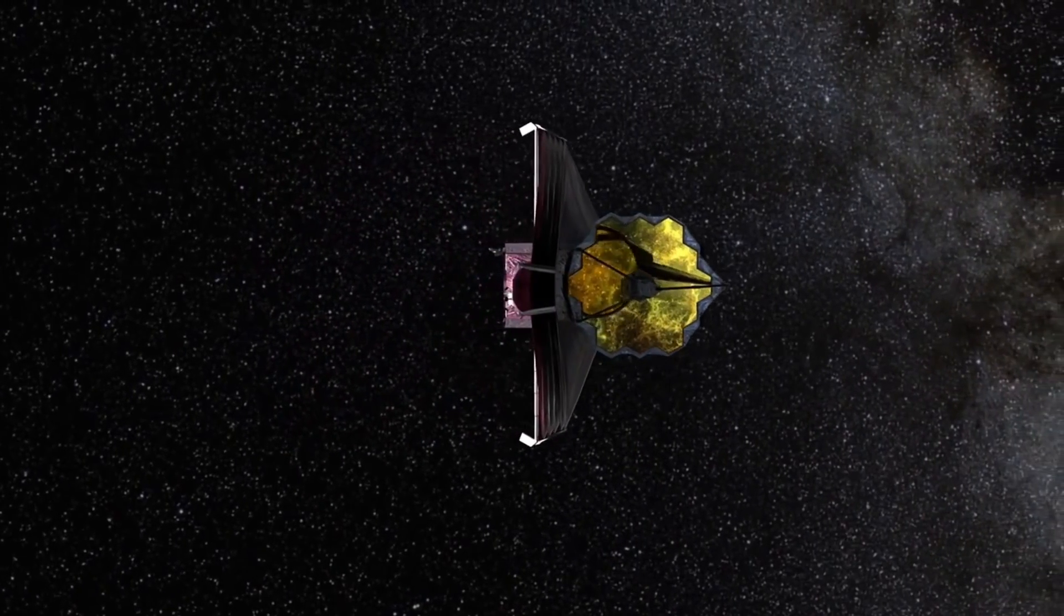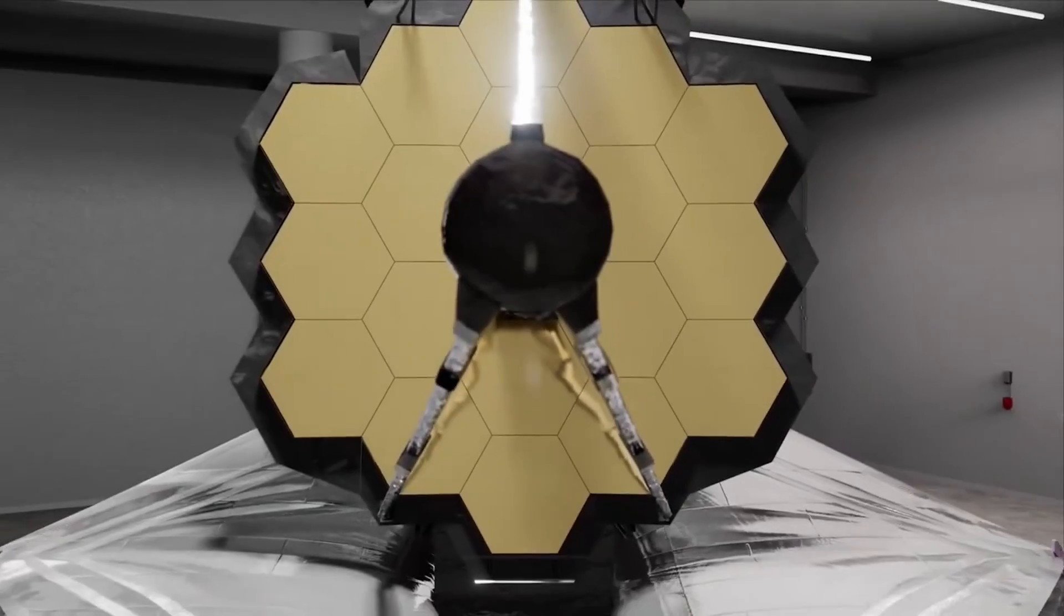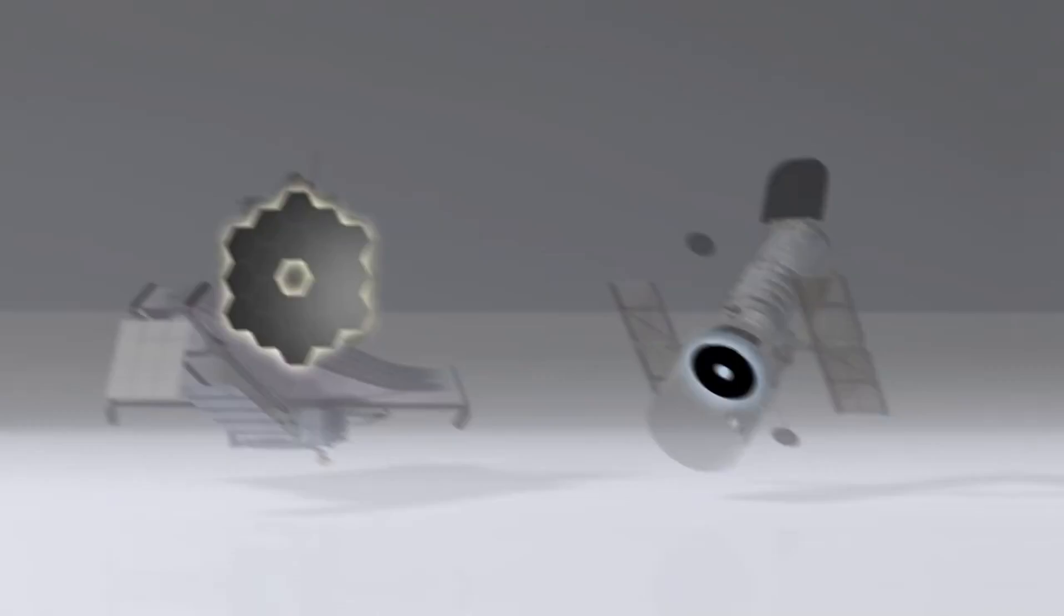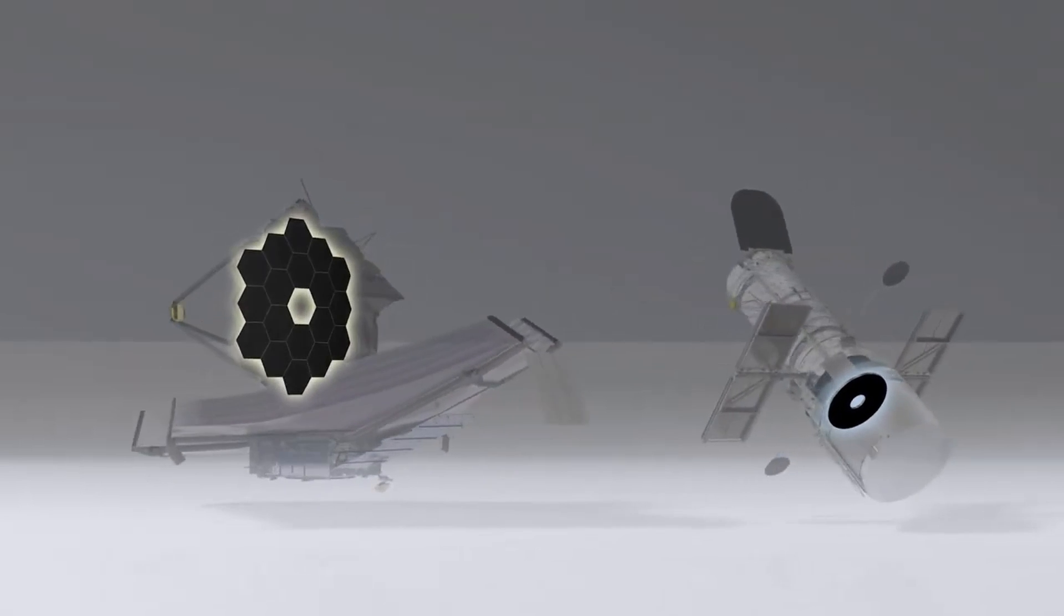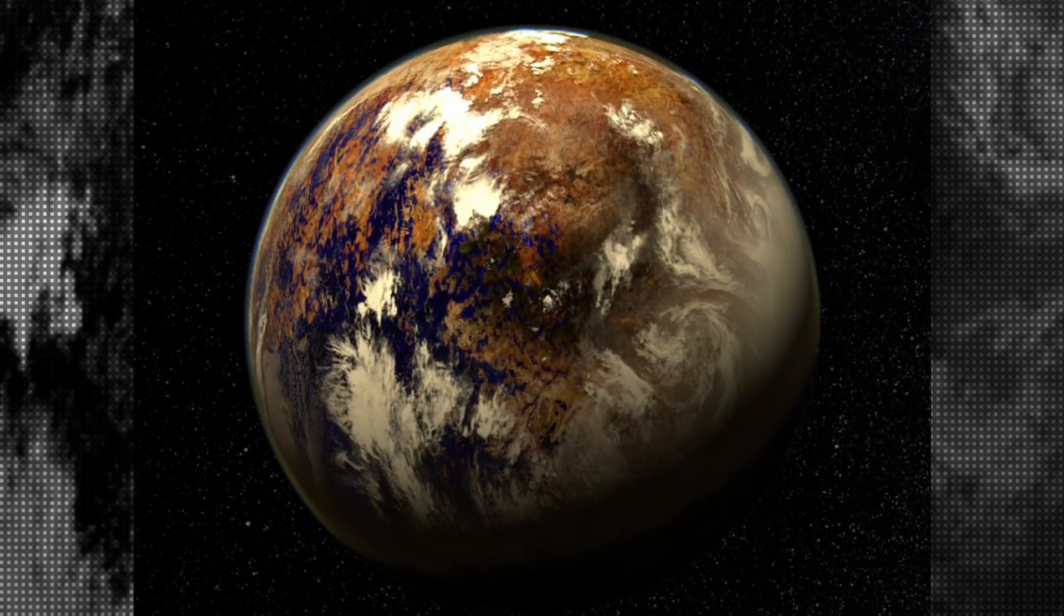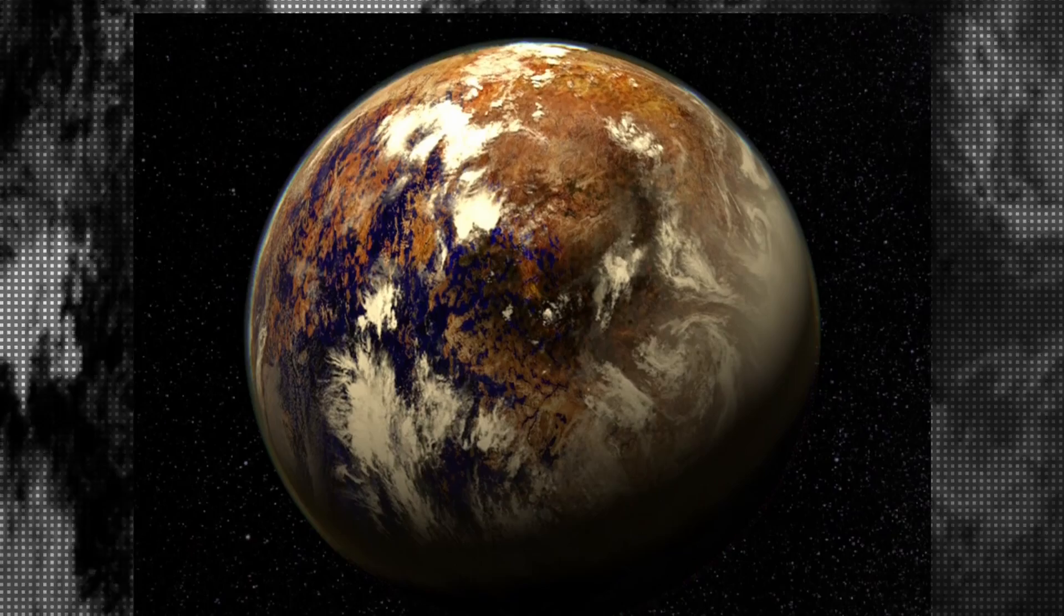It's equipped with a suite of scientific instruments that will enable astronomers to study exoplanets in unprecedented detail. The near-infrared camera or near-cam is one of these instruments, and it's used to detect the light emitted by Proxima b. But how can we tell the difference between natural and artificial lighting?